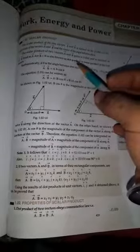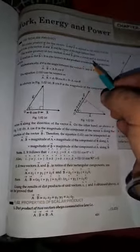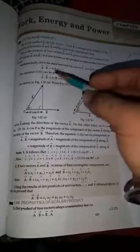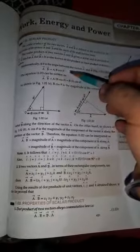The scalar product of two vectors is the dot product of two vectors. Scalar product means the dot product or the inner product of two vectors. This means A dot B is equal to AB cos theta.